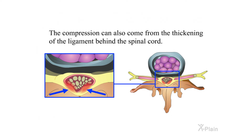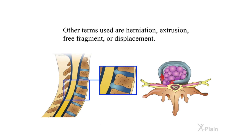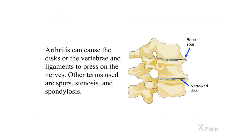The compression can also come from the thickening of the ligament behind the spinal cord. If the spinal cord or nerves are compressed, weakness and numbness could involve both arms and possibly the legs; control of the bladder and bowels can also be affected. Other terms used include herniation, extrusion, free fragment, or displacement. Arthritis can cause the discs, vertebrae, and ligaments to press on the nerves — other terms used are spurs, stenosis, and spondylosis.